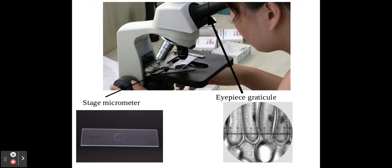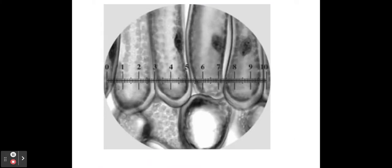The first thing that we need to do is look at the eyepiece graticule and our specimen using the eyepiece graticule. So here it is, here's an image, and as you can see in this particular image, if I look between these two red lines here, the width of that particular cell that I'm looking at there is 20 eyepieces.